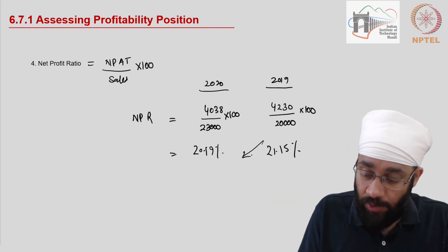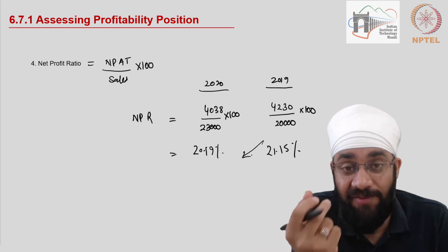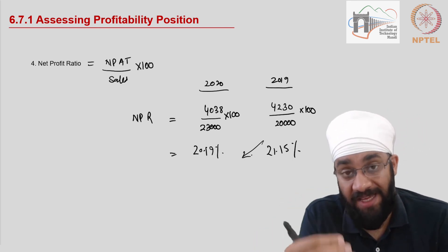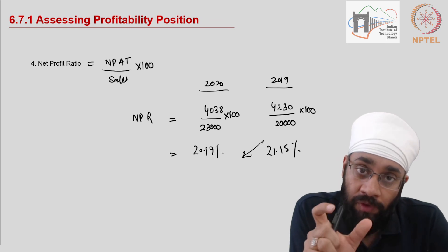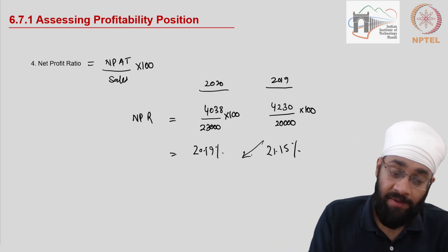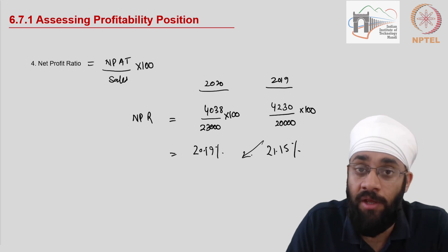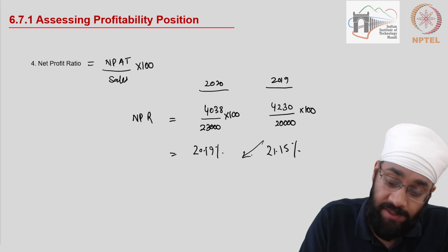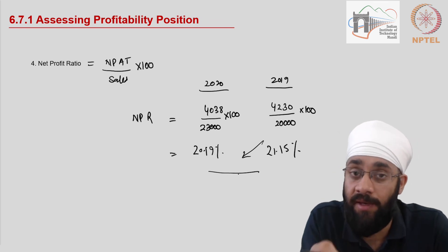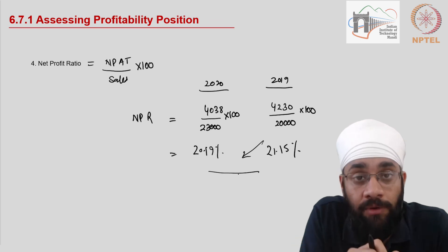The net profit is going down, but not significantly — only by a small number. However, if the units are in crores, even a 1% difference makes a large impact. To summarize: gross profit ratio went down, operating cost ratio went up, operating profit went down, and net profit ratio did not drop as significantly as the others. These are the first four profitability indicators. In the next video we will continue with the fifth indicator using the same income statement and balance sheet.